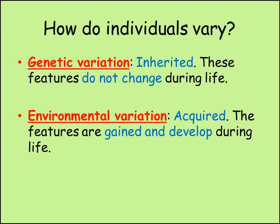Another difference between genetic and environmental variation is how they change during an individual's life. If the trait is determined by your genes, then there is no chance it will change during your life. You are born with the same combination of alleles that remain unchanged. Eye colour and blood group are constant for each individual. In contrast, environmental variation changes during an individual's life. These are known as acquired characteristics, showing that an individual can change during its life in response to the environment. Of course, these changes will not be passed on when the individual reproduces.